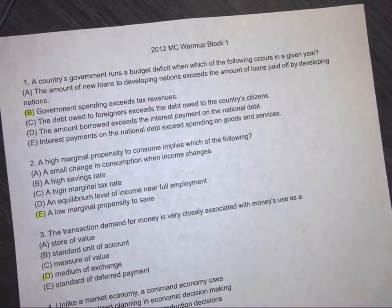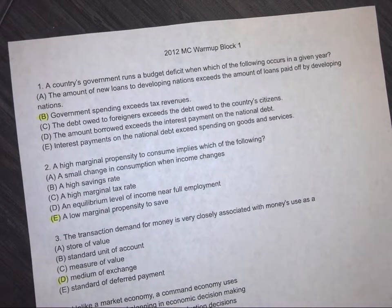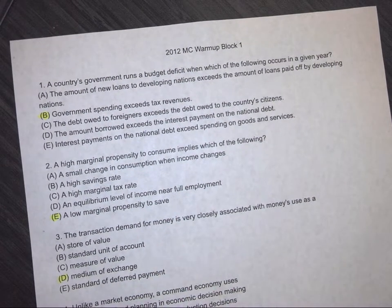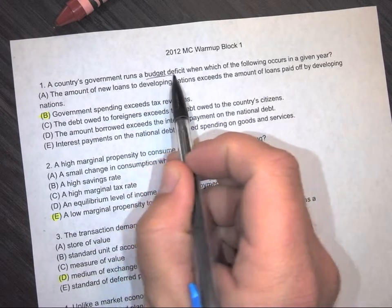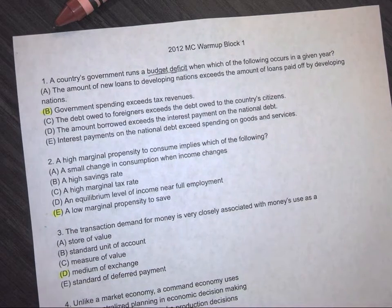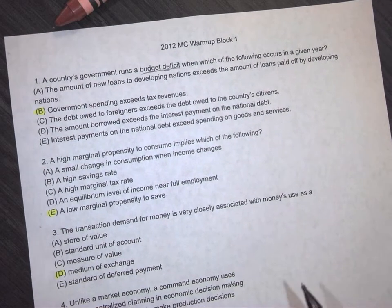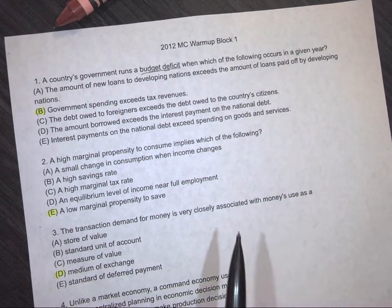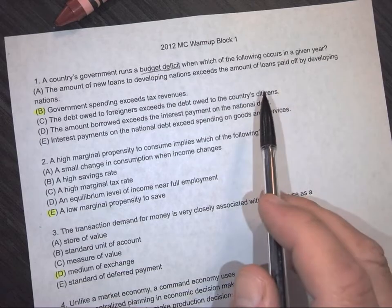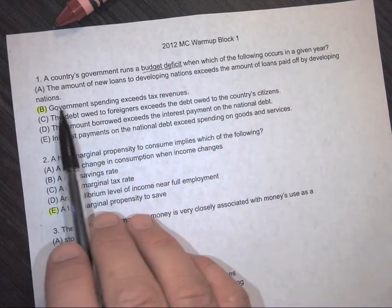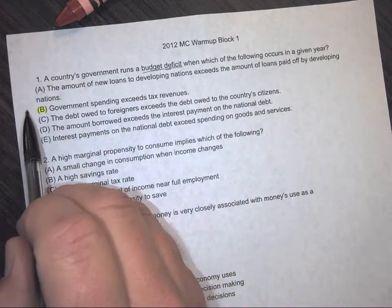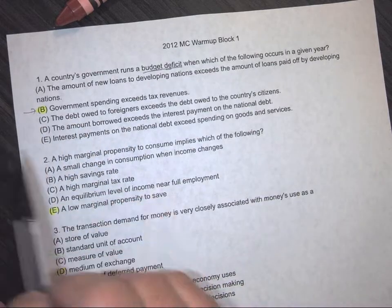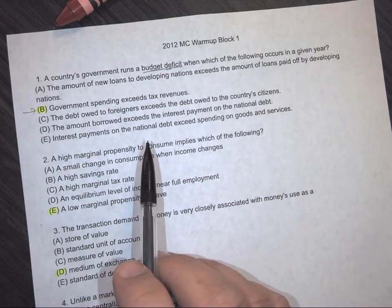Question number one: a country's government runs a budget deficit when which of the following occurs in a given year? Anytime they have a budget deficit, do they have money? No. That's not their debt — that's how much they are running negative for that year. So the correct answer is B: they're spending over their tax revenues.